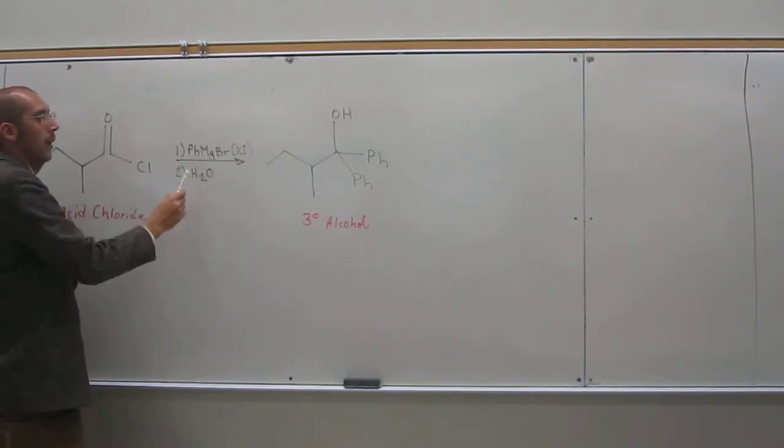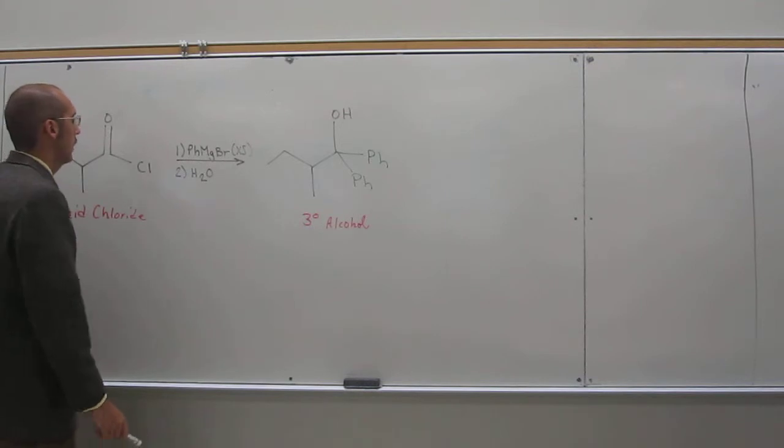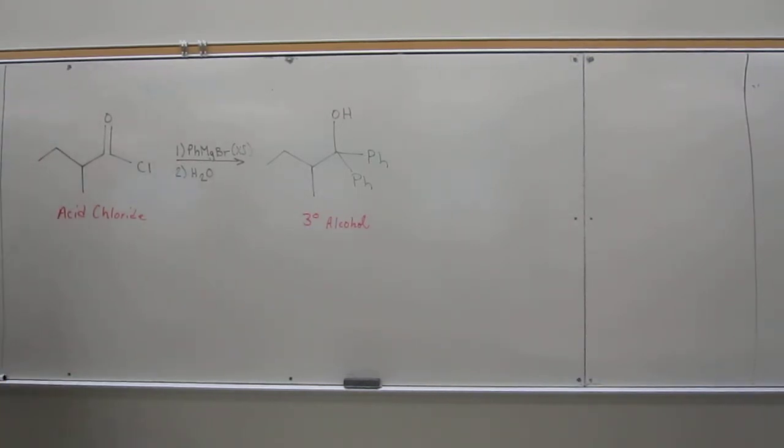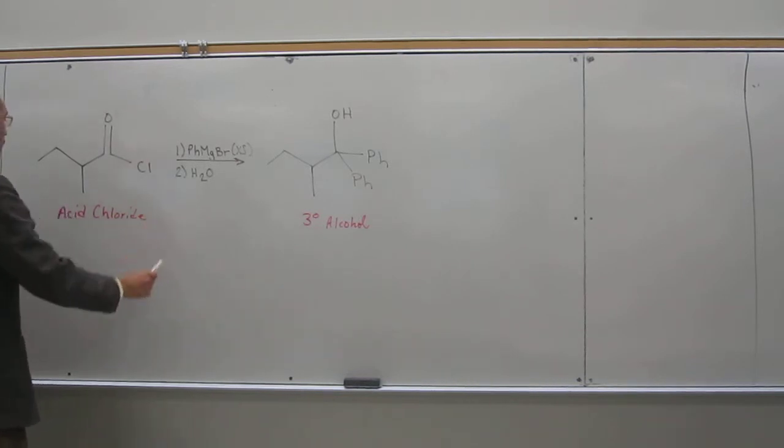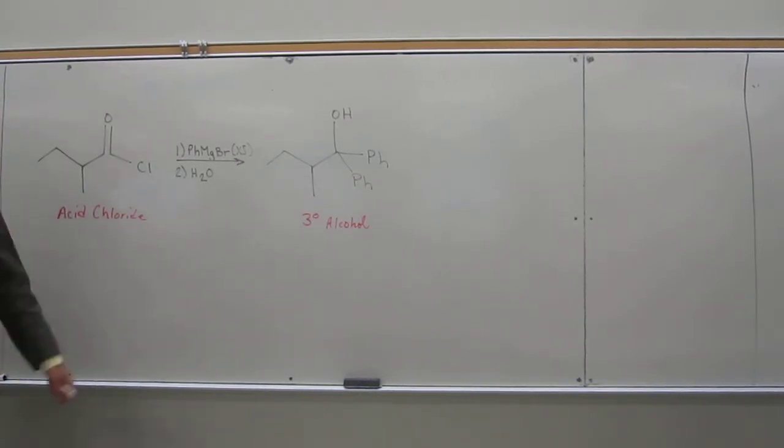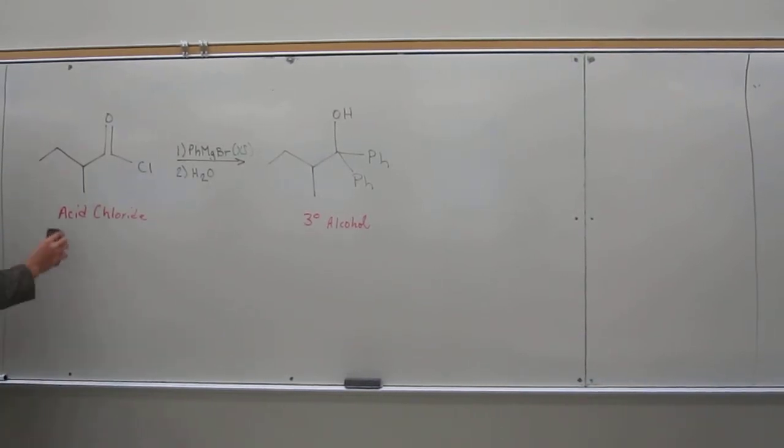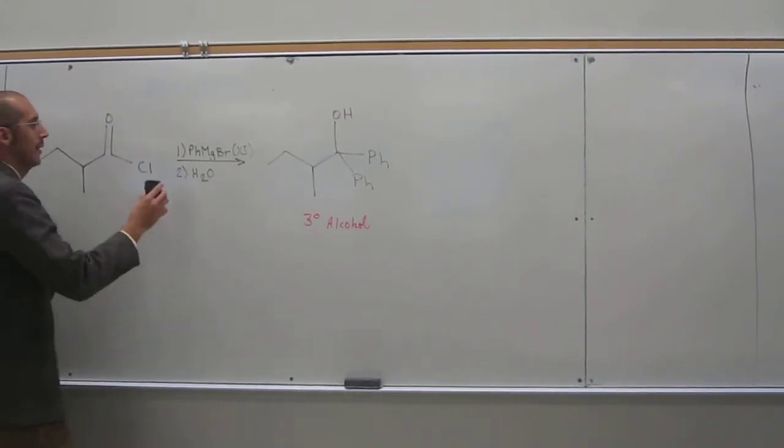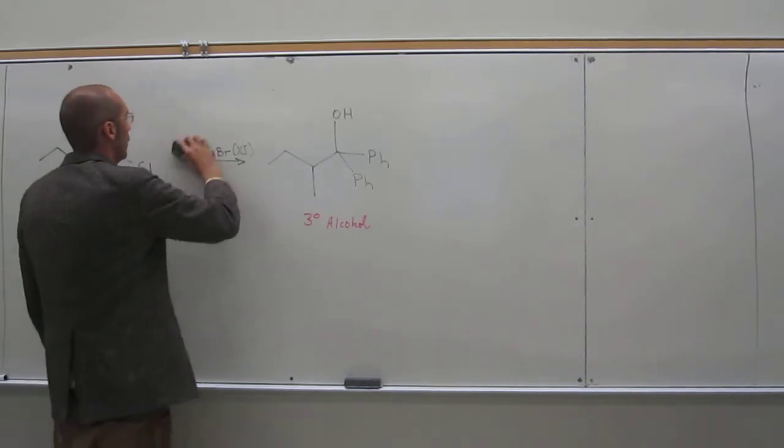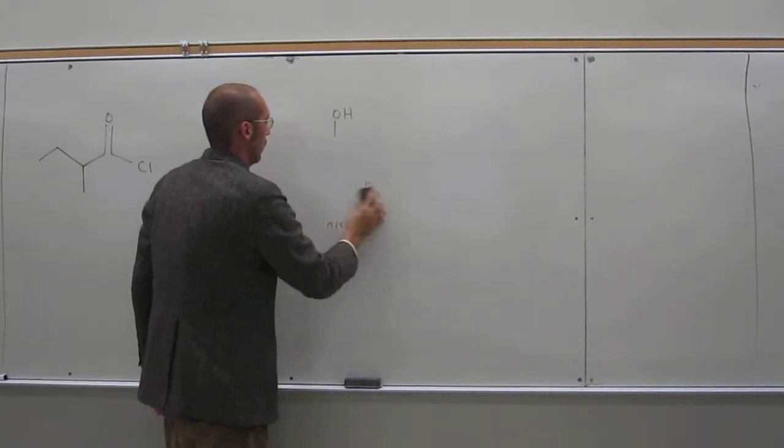We reacted it with excess Grignard reagent, and then protonated the resulting alkoxide with water. Let's do this mechanism. The red's easier to see than the black, probably on video, since this black pen is dying.